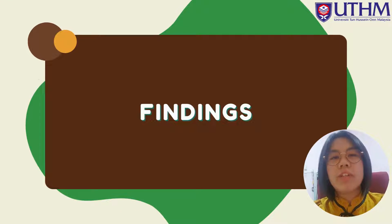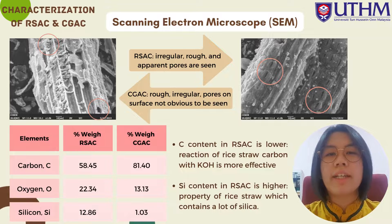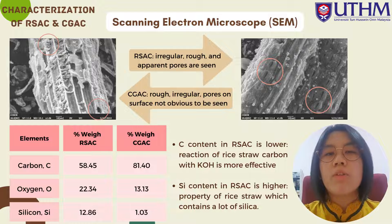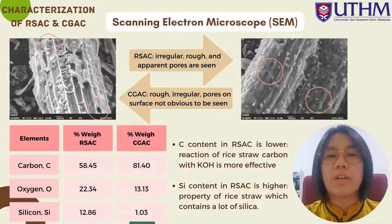Next is the findings of the project. Both activated carbons were characterized by scanning electron microscopy (SEM) and Fourier transform infrared spectroscopy (FTIR). Based on the micrographs, the surface of the rice straw activated carbon was irregular, rough, and apparent pores are seen. For Citronella grass activated carbon, the surface is rough and irregular, but the pores on the surface are not as obvious compared to the rice straw activated carbon. The SEM analysis shows that rice straw develops more pores compared to Citronella grass activated carbon.